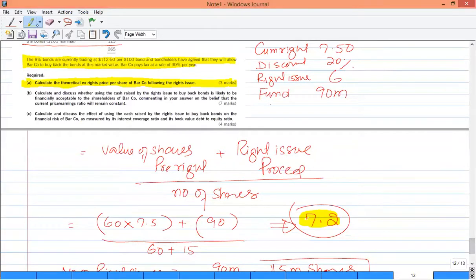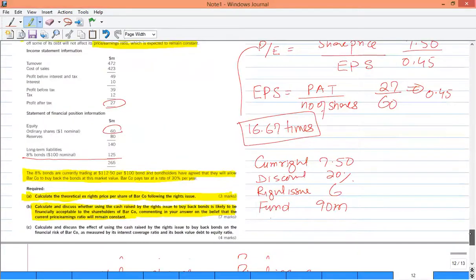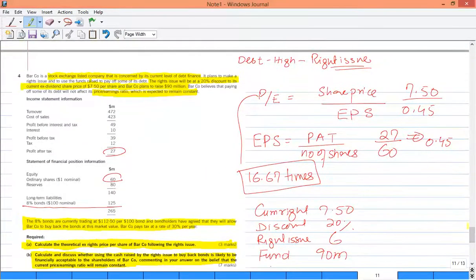The other part is tricky. Calculate and discuss whether using the cash raised by the right issue to buy a bond is likely to be financially acceptable to the shareholders of Barco, commenting on the belief that the price to earning ratio will remain constant. What did we get out of this formula? We have released existing price to earning ratio. Existing price to earning ratio is 16.67 times. So if this buys back, it is saying that there is no difference in price to earning ratio.